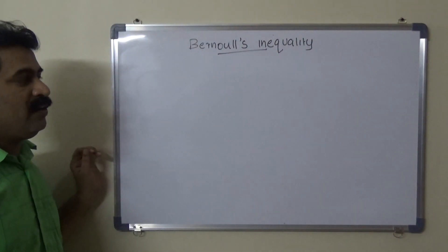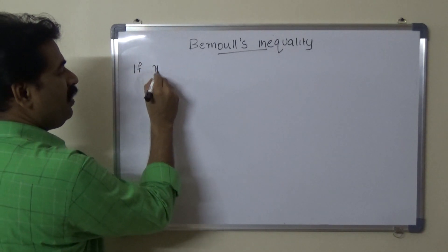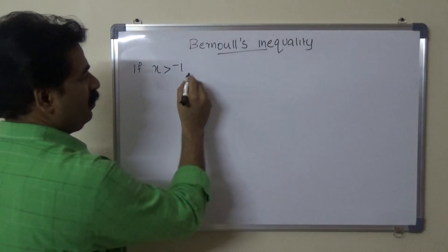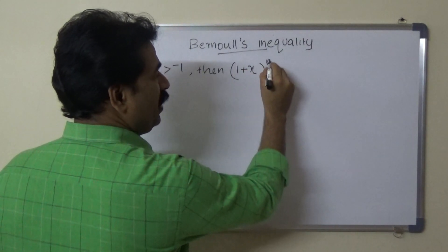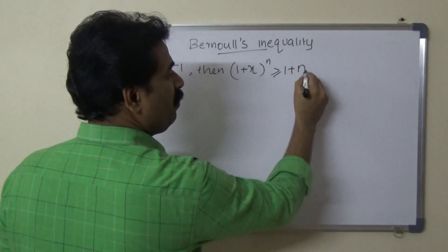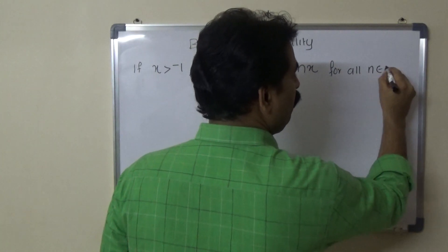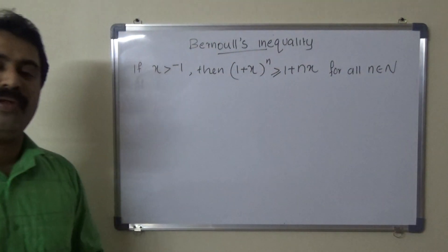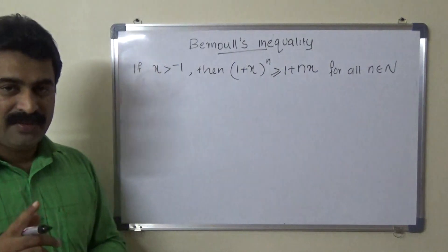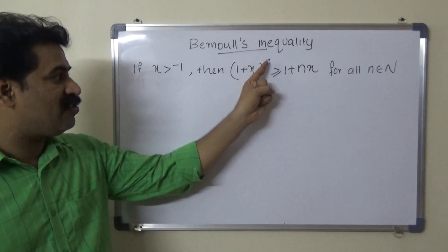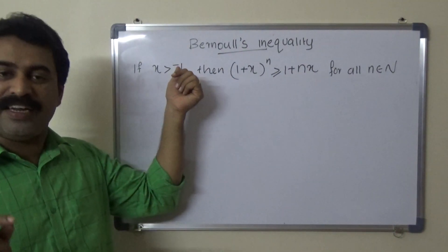Bernoulli's inequality. Its statement is: if x is greater than minus 1, then (1 + x) raised to n is greater than or equal to 1 + nx, for all n belonging to the set of natural numbers. Here x is a real number greater than minus 1.